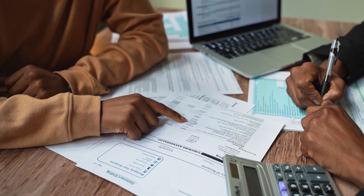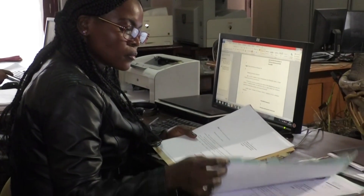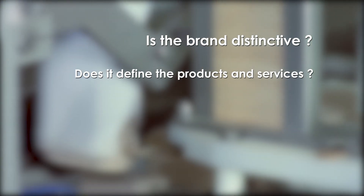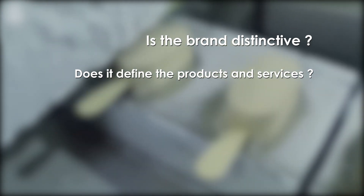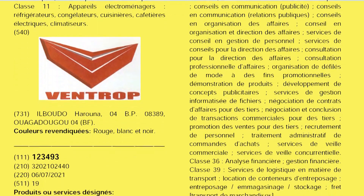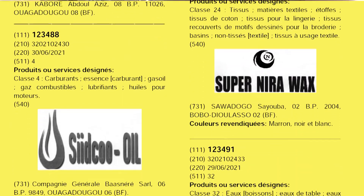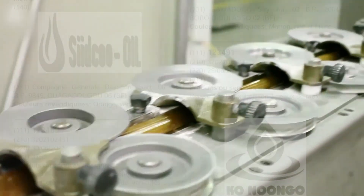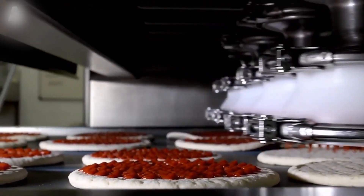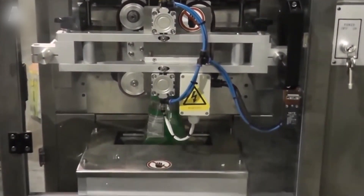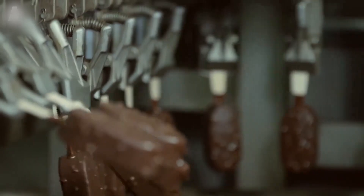During this time, OAPI carries out the formal and substantive examination, which among other things makes it possible to verify that your mark is distinctive — that it does not describe your goods or services, that it is not likely to mislead the public as to the nature or characteristics of the goods or services, and also that your mark does not reproduce or imitate flags, emblems, and official signs legally protected. If the substantive and formal examination is conclusive and no opposition or claims to the rights of protection of the trademark concerned is filed, or even if the oppositions or claims are not well founded,